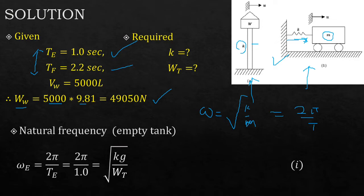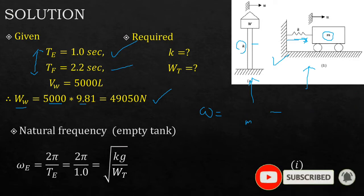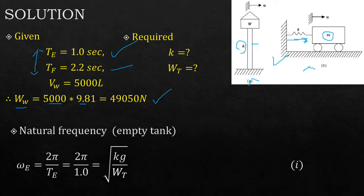So natural frequency, 2π over T when it's empty, 2π over TE, is the same as the square root of kg over WT. Remember, the mass is expressed using the weight, where mass equals weight over g. So this is why you have g here. This is equation one.